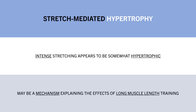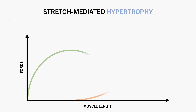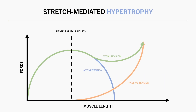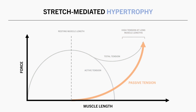The reason for this stretch-mediated hypertrophy might be explained to some extent by the length-tension relationship. This is the idea that stretching a muscle to its most lengthened position usually involves high muscle tension, due to an increase in passive tension experienced by the muscle fibers as it is stretched to longer lengths. It has therefore been hypothesized that this high tension from intense stretching might be a stimulus for hypertrophy, similar to the way mechanical tension has been theorized to stimulate muscle growth.